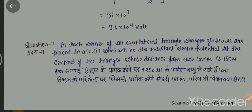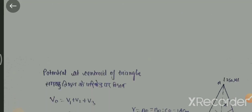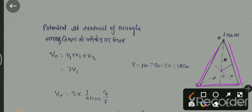Question number 11, last है हमारा। एक equilateral triangle के प्रत्येक vertex पर charge है। 18 cm की दूरी पर — यानी centroid पर — विभव कितना होगा? Equilateral triangle के प्रत्येक vertex पर 250 microcoulomb है, और r = 18 cm at the centroid। हमको electric potential का resultant निकालना है। तीनों कोनों से centroid पर निकालेंगे: 3 times of (1 upon 4πε₀ × q / r)।